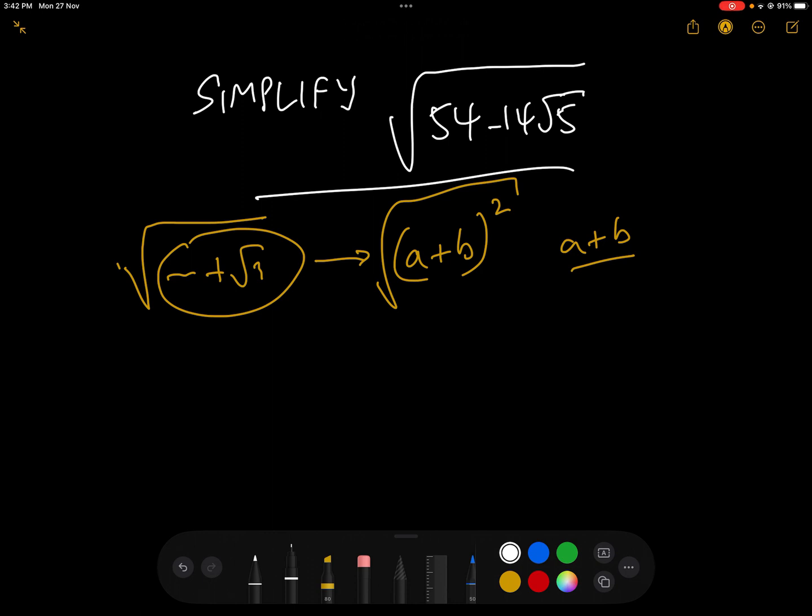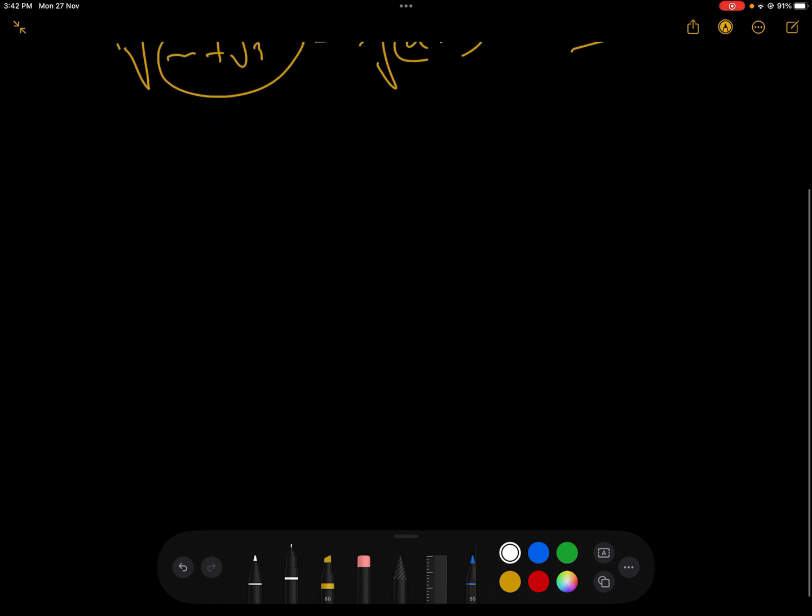Now, what I'm going to do first of all is I will just show you the trick and then afterwards I'll explain why it works and do it on a couple more examples to show just how powerful it is. So what we're going to do, and this is the trick, 54 minus 14 root 5 and we need to remember we need to get it in some form a plus b squared and because there's a root 5 there, we actually know that we're going to be getting it into the form a plus b root 5 squared because there's a root 5 here.